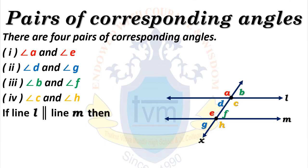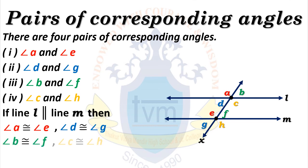If line L and line M are parallel, then corresponding angles formed in this figure will be congruent. So angle A is congruent to angle E, angle D is congruent to angle G, angle B is congruent to angle F, and angle C is congruent to angle H. All four pairs of corresponding angles are congruent since line L and line M are parallel.